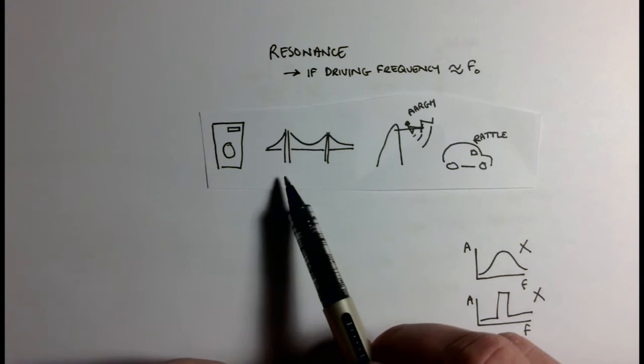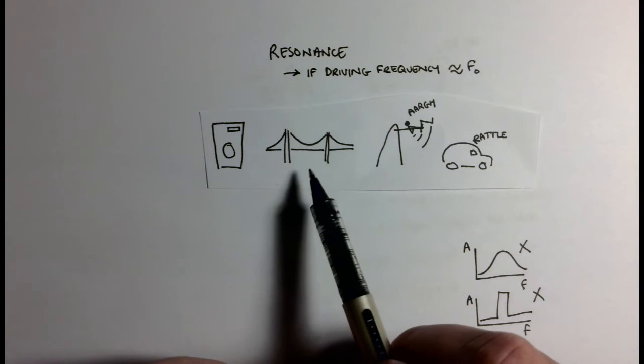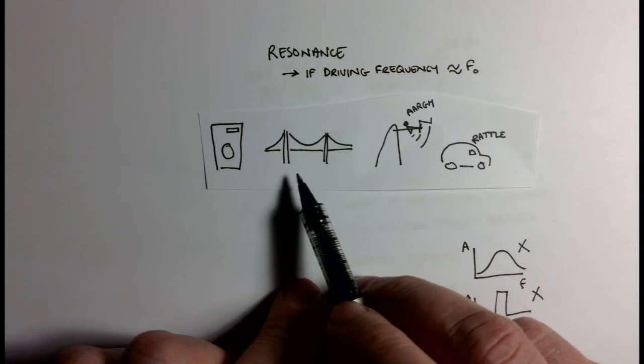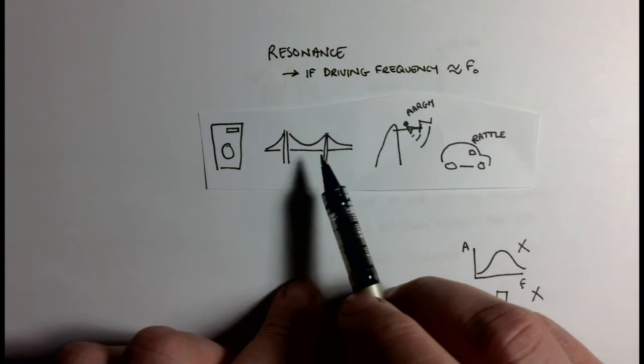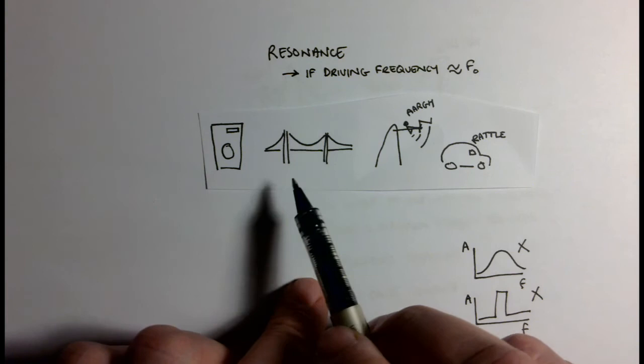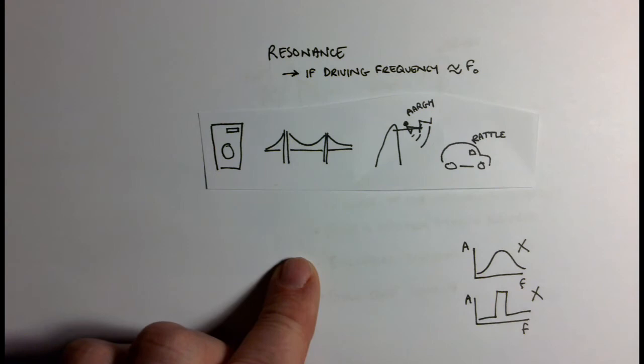This stepping ended up being very close to the natural frequency of the bridge, so the stepping of the people provided a driving frequency close to the natural frequency. This resulted in maximum energy transfer and increased amplitude of the oscillations. It terrified the people on the bridge. It was only open for one day, then they had to close it and add lots of damping equipment to stop it from happening.